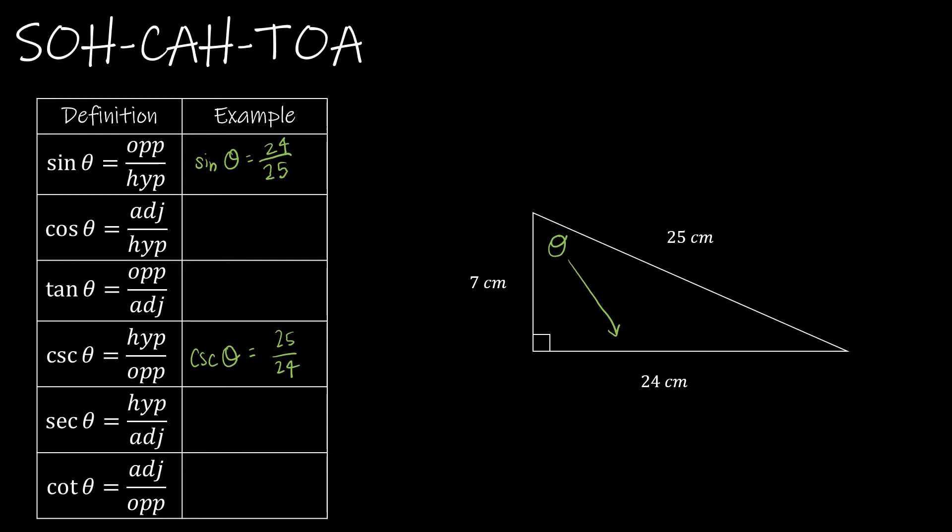If I look at cosine, cosine takes the side adjacent over the hypotenuse. So cosine theta equals 7 over 25, and then secant theta equals 25 over 7. And then the last one, tangent, doesn't use the hypotenuse, but does opposite and then adjacent. So tan theta is 24 over 7.